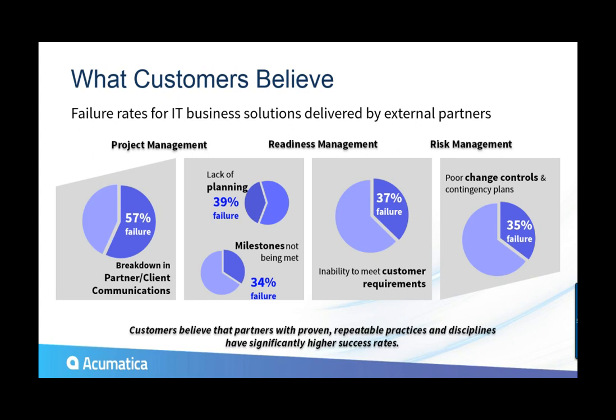The studies show the biggest issues are in areas where a little planning and structure would have helped. Lack of planning accounts for 39% failure, milestones not being met 34%, and breakdown in communications 57% — often because there isn't a defined communications process. The Acumatica Empower implementation methodology has been built to help address all of that.